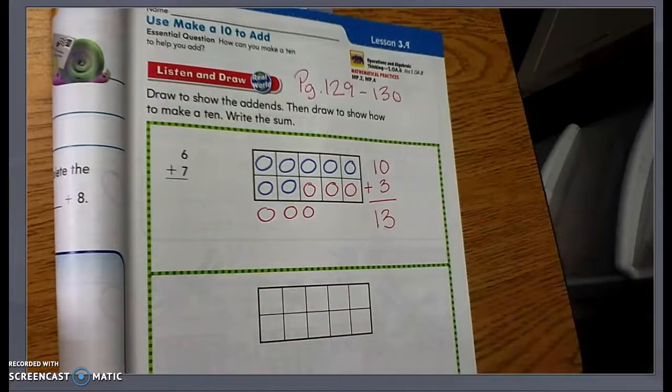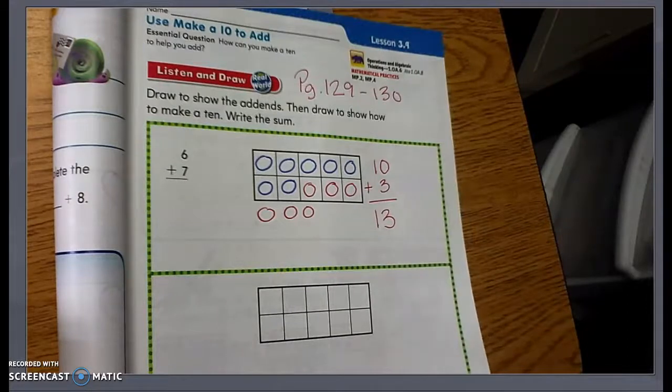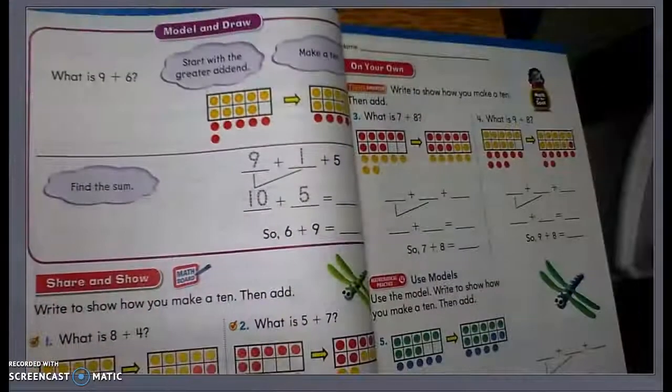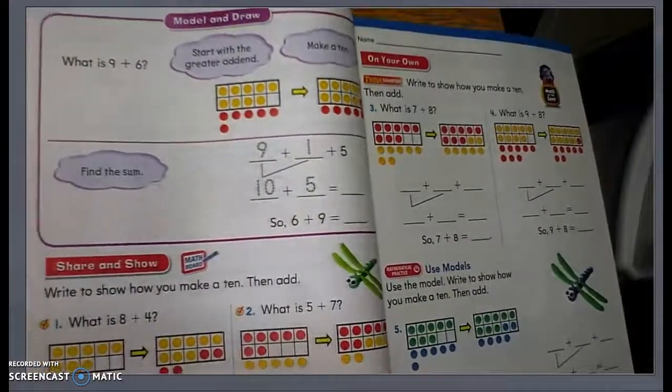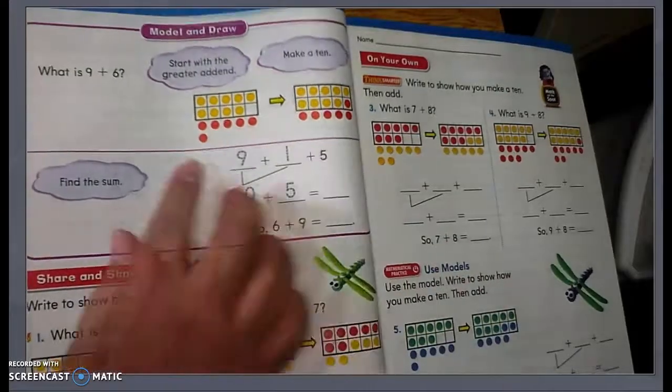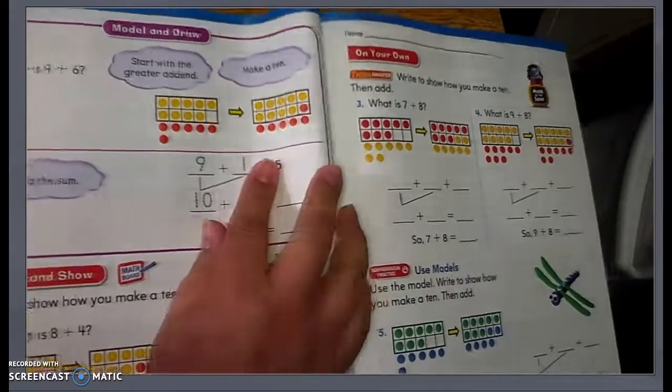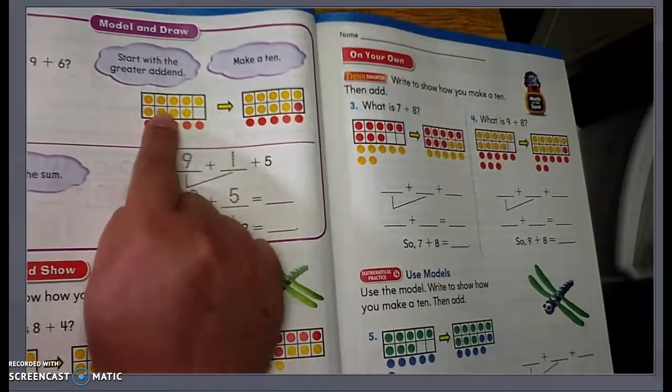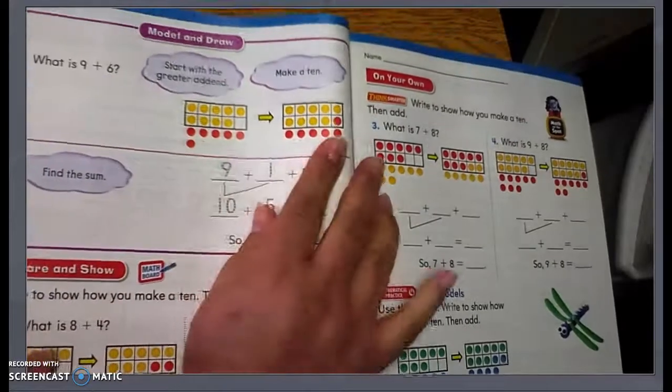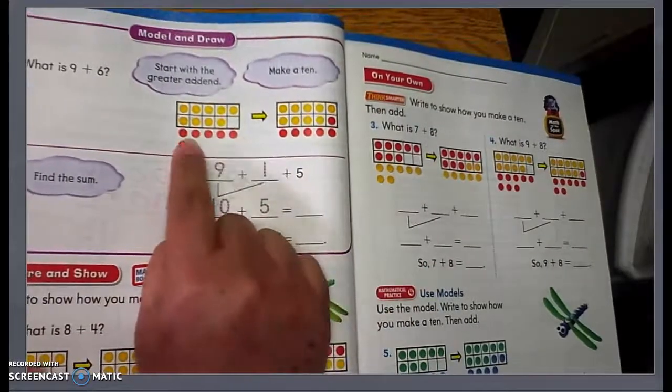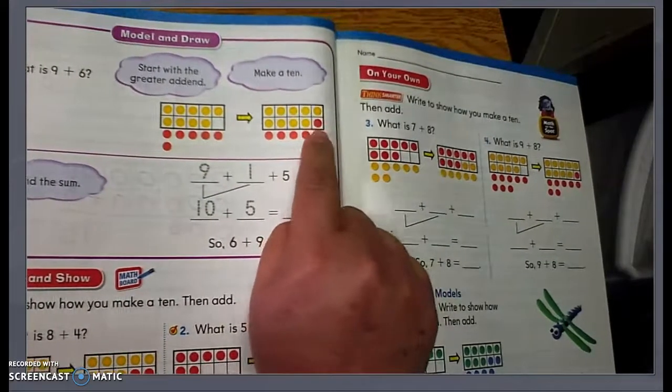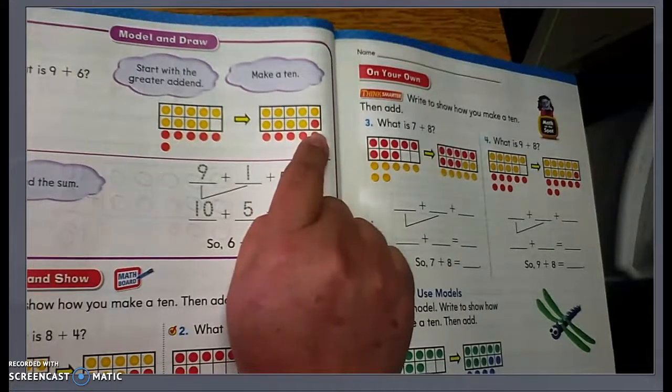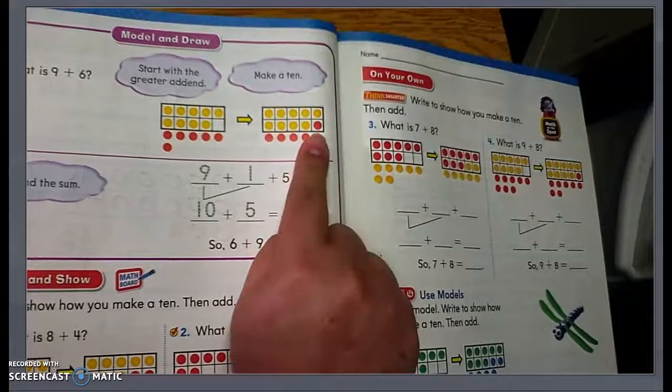Now we're going to turn the page to page 130. So now we're looking at what is nine plus six. Again, if we look at the picture, we do have nine yellow counters and six red counters. We are going to take one of those red counters and fill in that 10 frame because we want to make it easier for us to add.